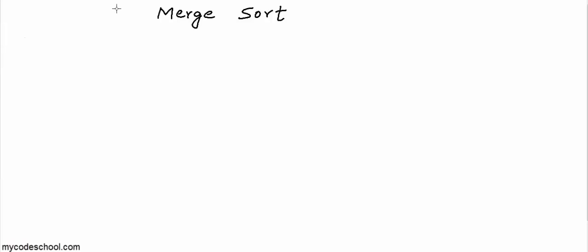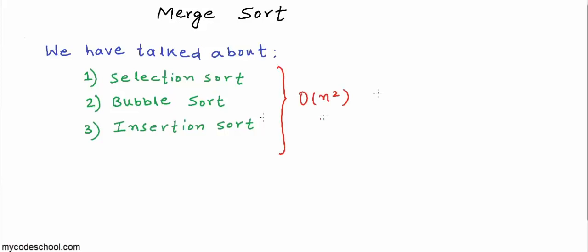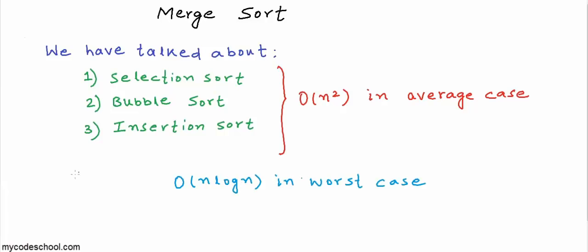So far in this series on sorting algorithms, we have talked about three sorting algorithms: selection sort, bubble sort, and insertion sort, and we have seen that these algorithms are not so fast. They are all O(n²) in average case. Now, in this lesson we are going to talk about one algorithm which is O(n log n) in worst case, and this algorithm is merge sort.